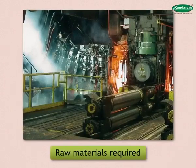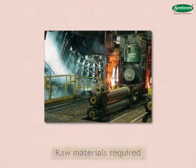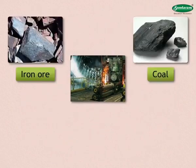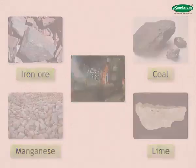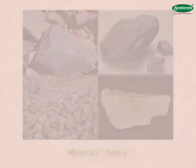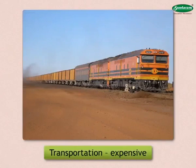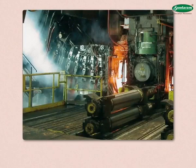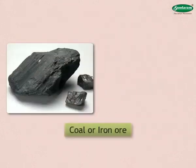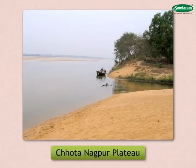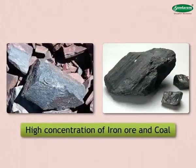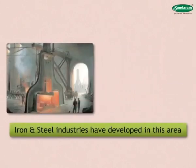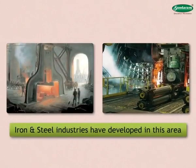Raw materials required in this industry are iron ore, coal, lime, manganese, etc. These minerals are heavy and hence their transportation is expensive. Therefore, this industry is found in areas producing coal or iron ore. The Chhota Nagpur plateau has a high concentration of iron ore and coal, so the iron and steel industries have developed in this area.